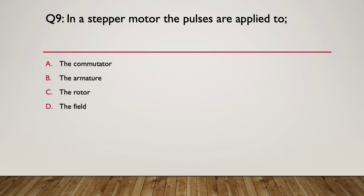Question ten: in a stepper motor, the pulses are applied to what? A — the commutator; B — the armature; C — the rotor; or D — the field. Think about how a stepper motor is constructed and what we are switching to get it to rotate. We're switching the field. It creates a commutator action but there is no actual commutator. The armature is a spinning magnet and there is no rotor as such — we are simply switching pulses to the field.